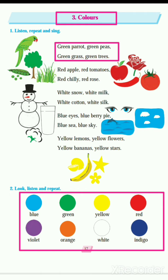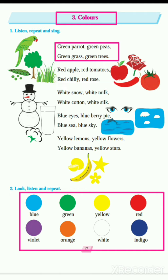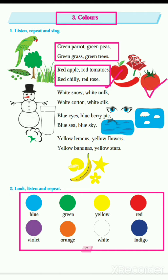Then the next color given is red. What is given about red color? Red apple, red tomatoes, red chili, and red rose. You can see each picture in your textbook. First is red apples, then red tomatoes, then red chili, and then red rose.